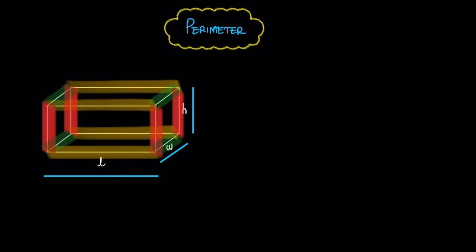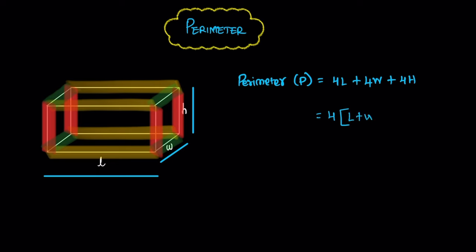The perimeter just combines all the edges. Simply, P is equal to combining all the edges: 4 length plus 4 width plus 4 height. Now 4 is a common factor, so just take it out. So 4 is common for all terms, giving us 4 times (l plus w plus h).